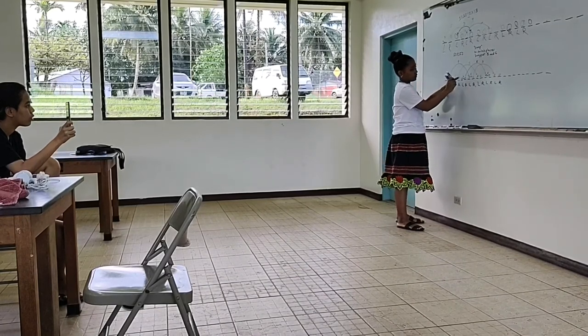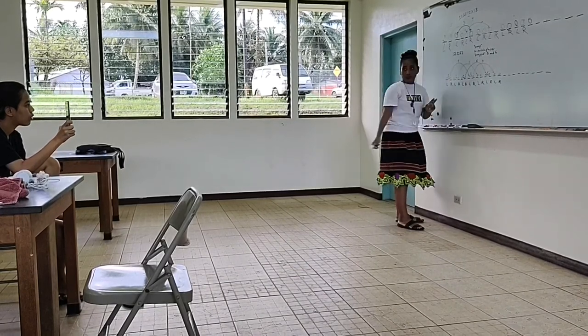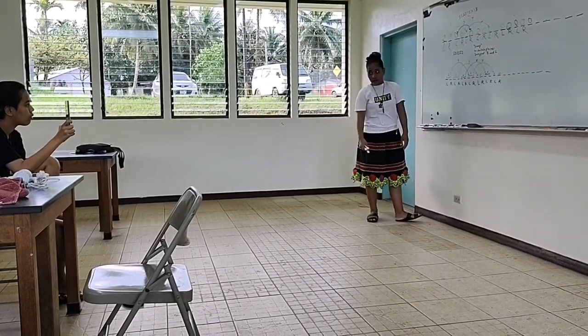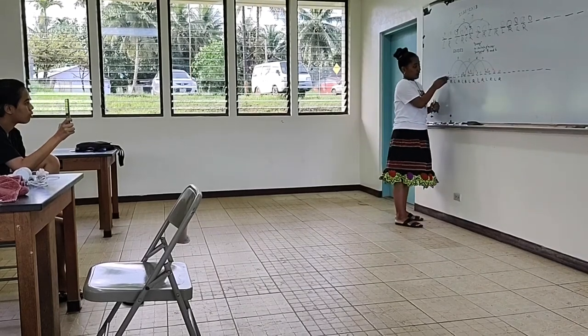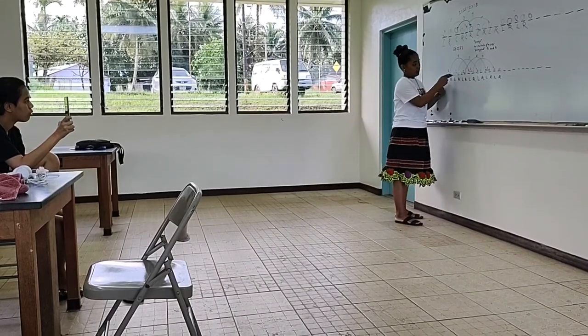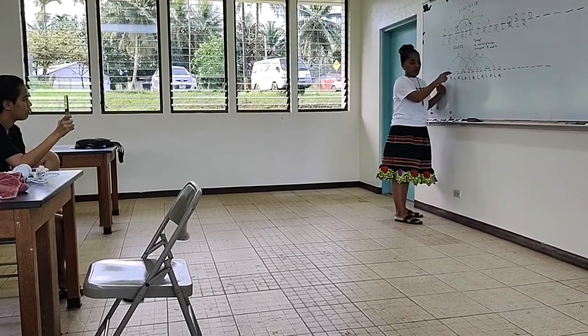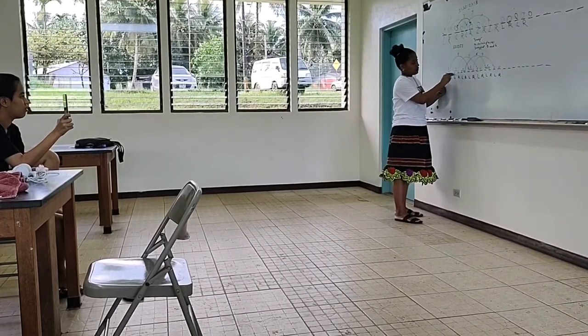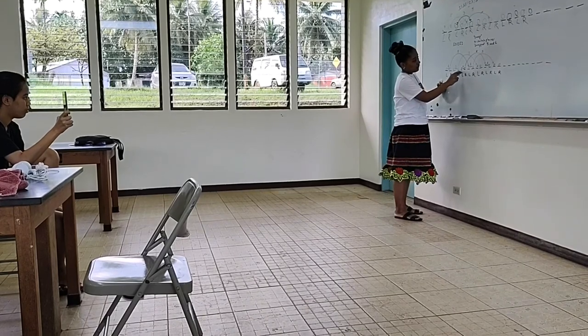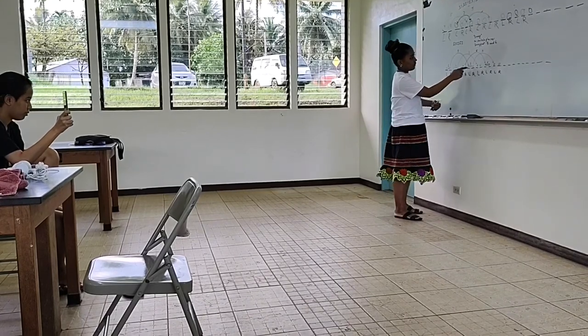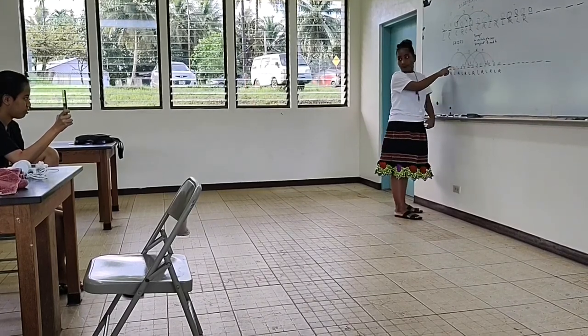One, two, three, four — which is now. Count this as one and count this as one. One, two, three, four, five. And this is the prime product.